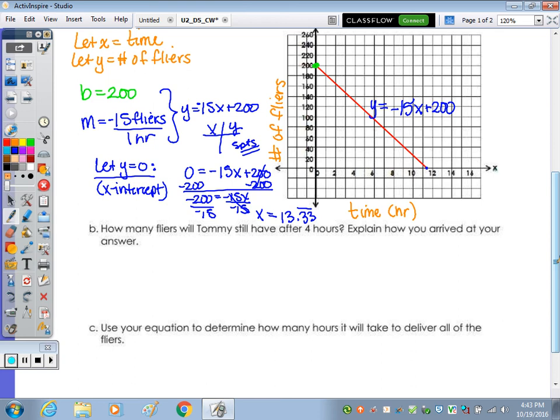Part b: How many flyers will Tommy still have after four hours? Your four hours is your x. You can look at the graph where x equals 4, or you can plug it into the equation, which is y equals negative 15 times 4 plus 200. I would actually do it out by hand. 15 times 4 is negative 60, plus 200 is going to give you a y value of 140. The y-axis is the number of flyers, so it's going to be 140 flyers.